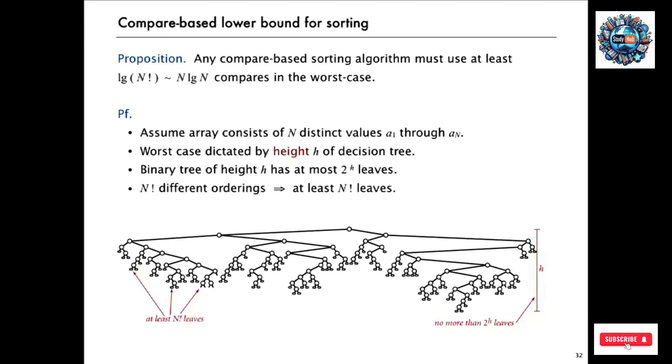And then the proof generalizes what I talked about in the decision tree on the last slide. We assume that the array consists of N distinct values. And there's a decision tree that describes the performance of any algorithm, the compare sequence done by any algorithm to determine the N factorial different orderings. So this tree has to have at least N factorial leaves. And if the tree is of height h, it has at most 2 to the h leaves. The tree that has the most leaves of height h is totally complete, and that one has 2 to the h leaves.